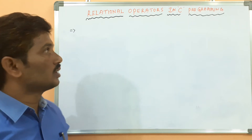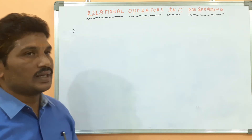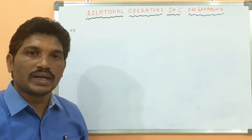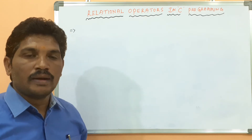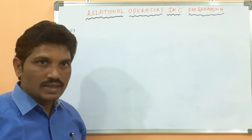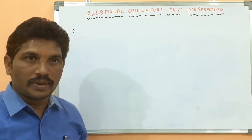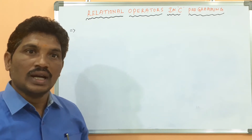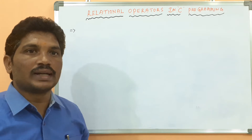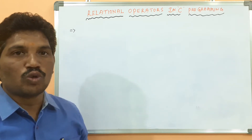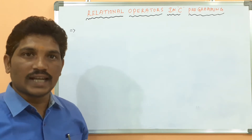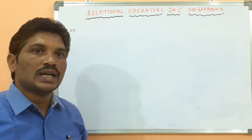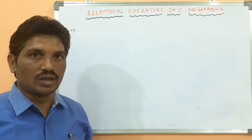Today I will talk about relational operators in C programming. Yesterday I started the operator concept in C and explained different types of operators: arithmetic operator, relational operator, logical operator, assignment operator, conditional operator, ternary operator, bitwise operator, size of operator, and BODMAS operator. Yesterday I talked about arithmetic operators with the help of an example.